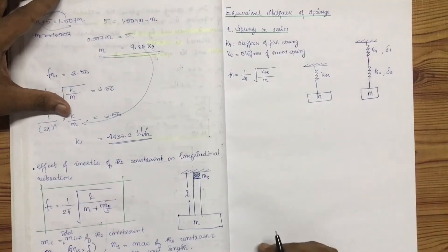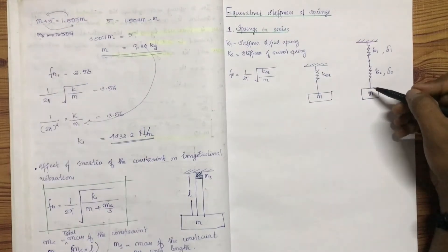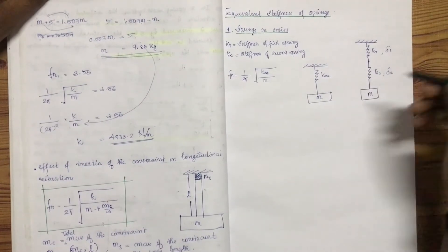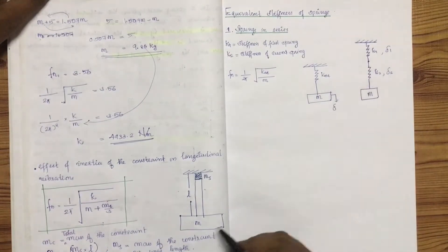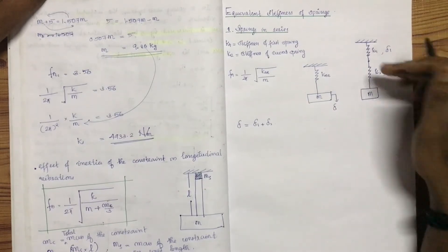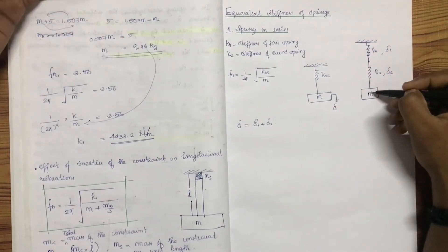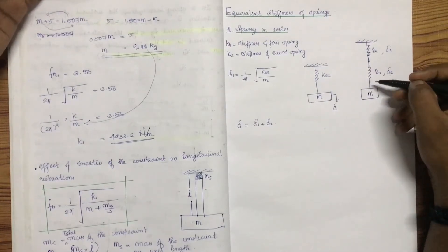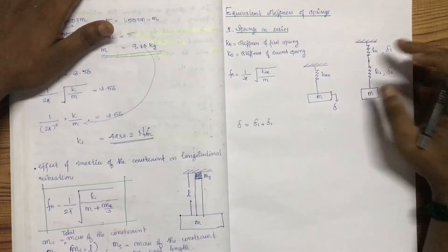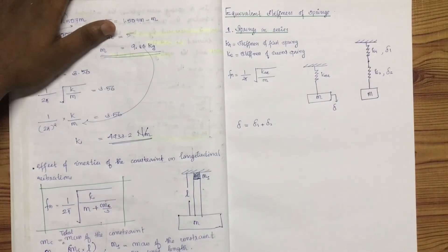This same force is transmissible — the same force passes through. The deflections are delta 1 and delta 2. The total deflection delta equals delta 1 plus delta 2. This force is the same through both springs. This mass will produce a total deflection; it is not just delta 1 or delta 2 alone.